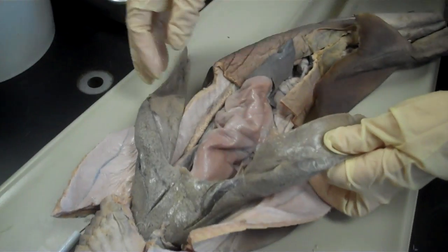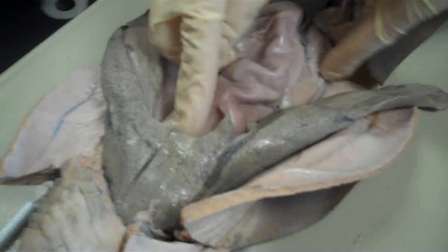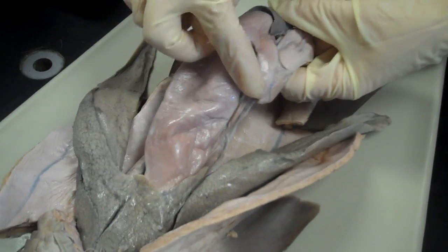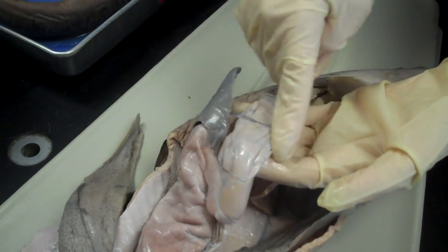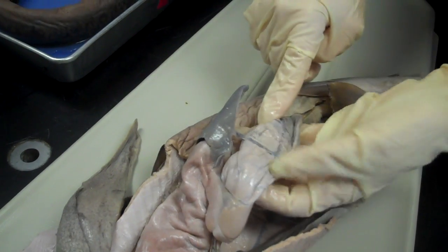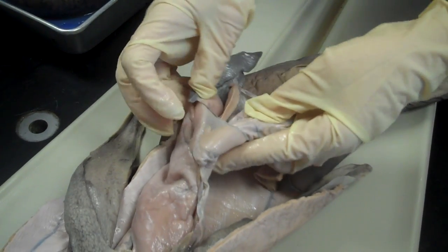So this is all liver. This is the gallbladder in the center. Here you have your J-shaped stomach. The base of that is the spleen. Stomach leads into the spiral intestine. Where the stomach and the spiral intestine meet, you find the pancreas.